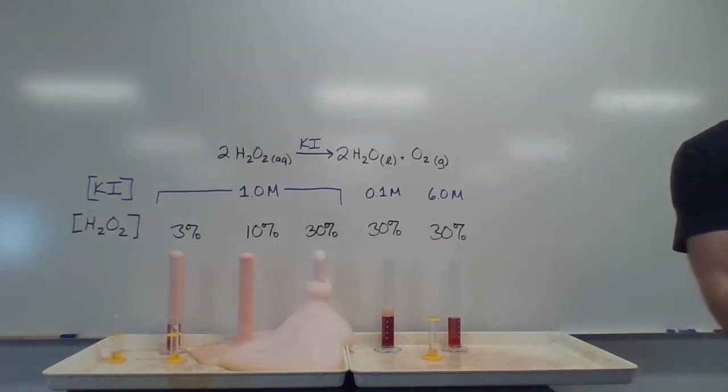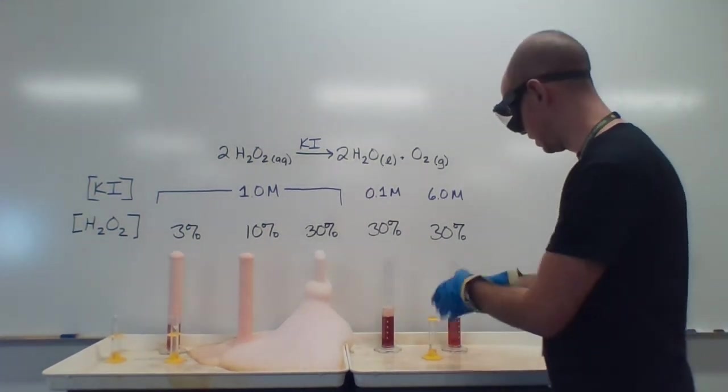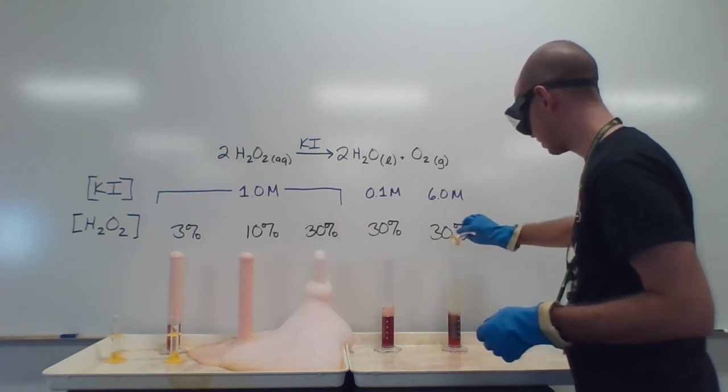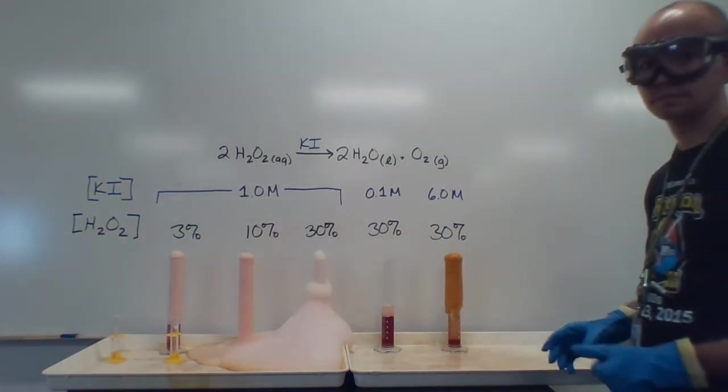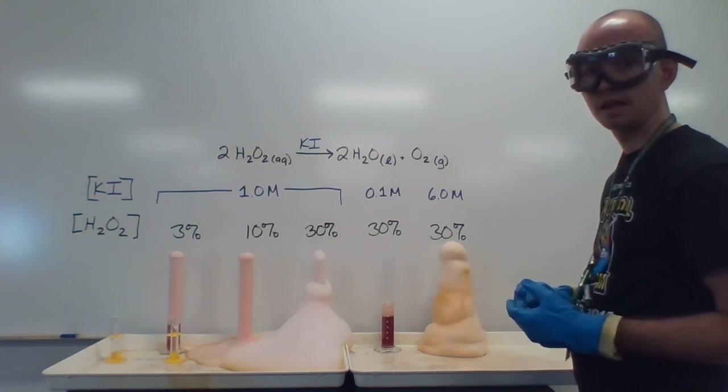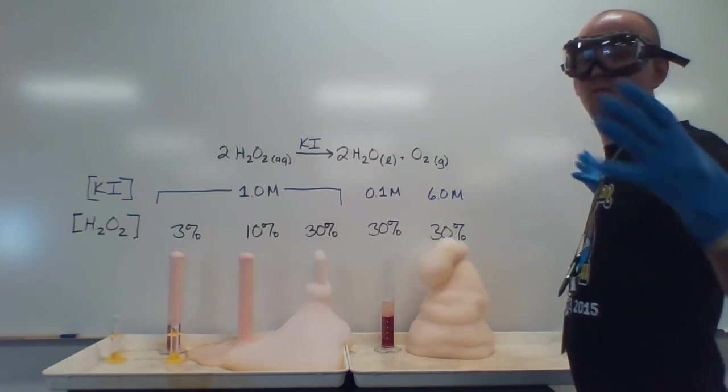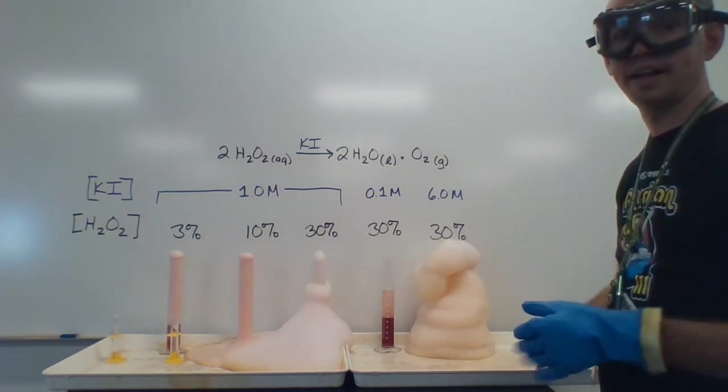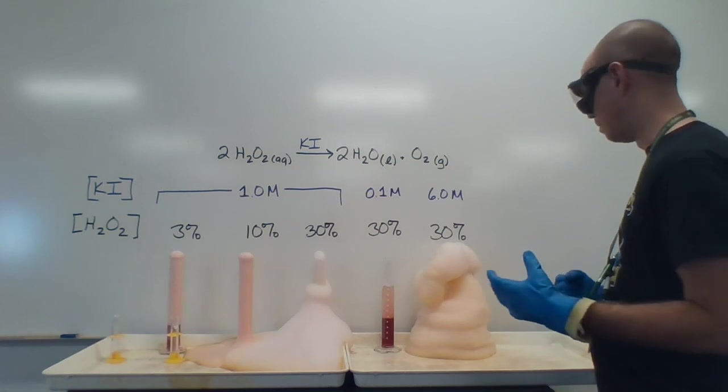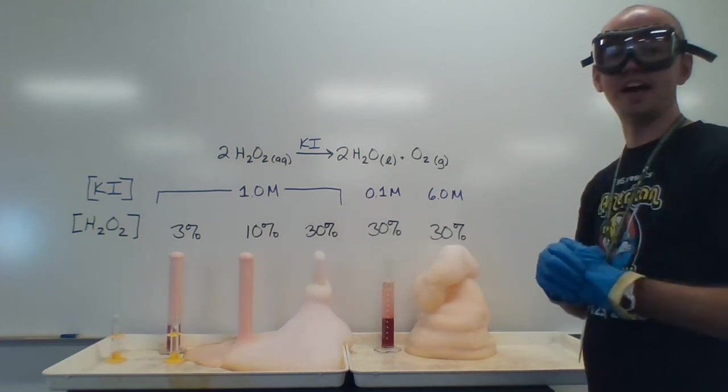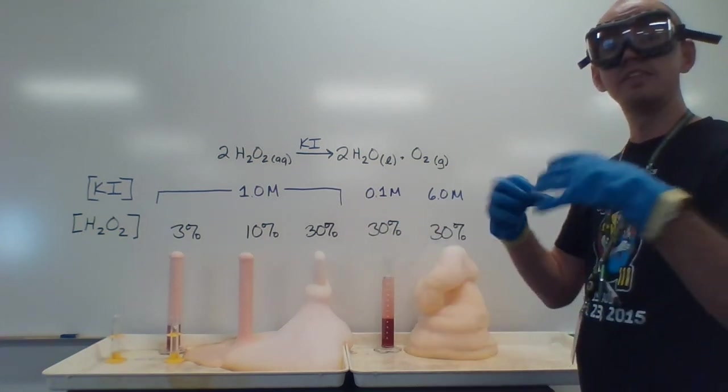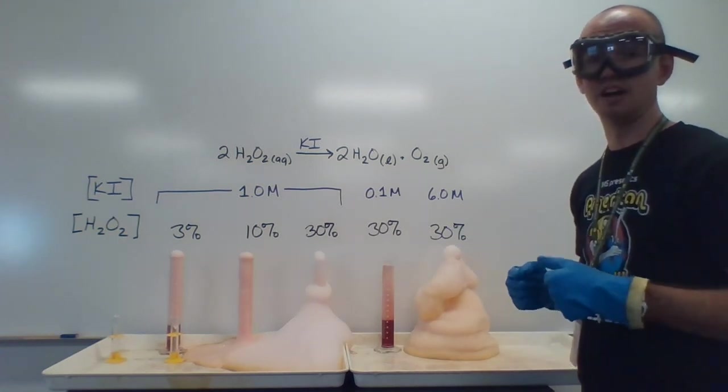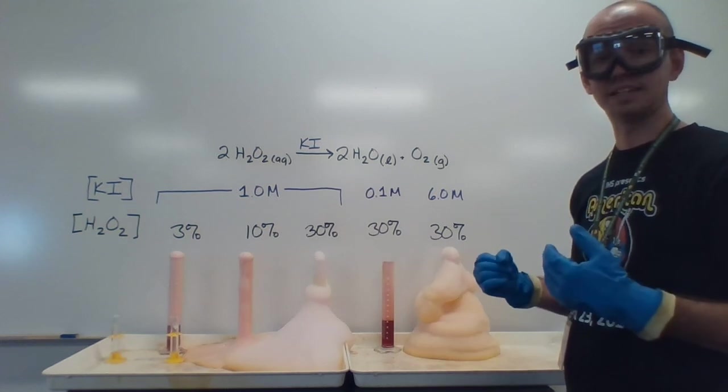And then here, we're going to see our last one, the highest concentration of peroxide with the highest concentration of catalyst. And that one, we've got our big foaming bubbles here. It is even more intense and more quick than our 30% with the one molar. So we see the effect of the concentration of the chemical we're decomposing, the peroxide. We see the effect of the concentration of the chemical that's acting as the catalyst.